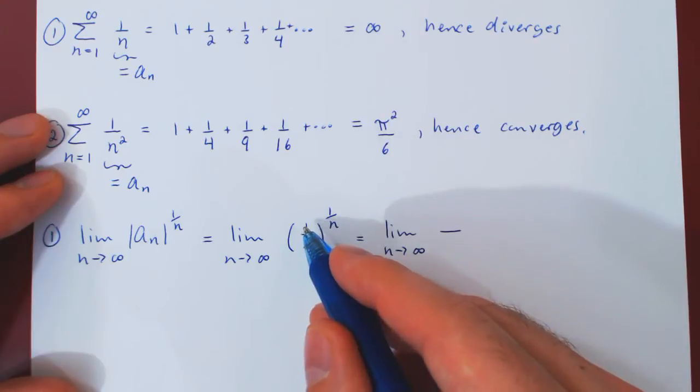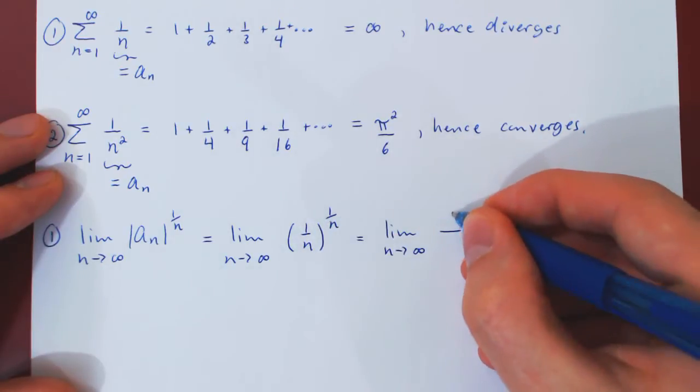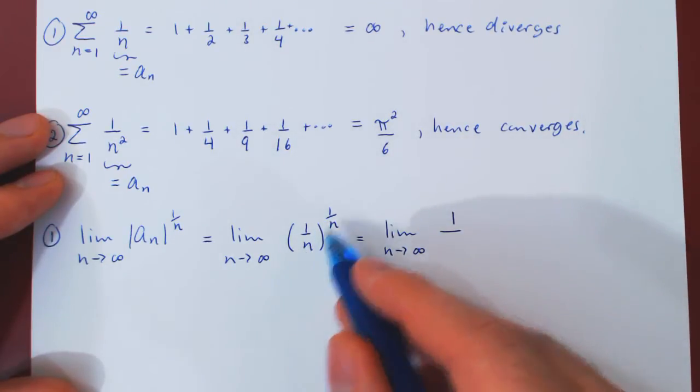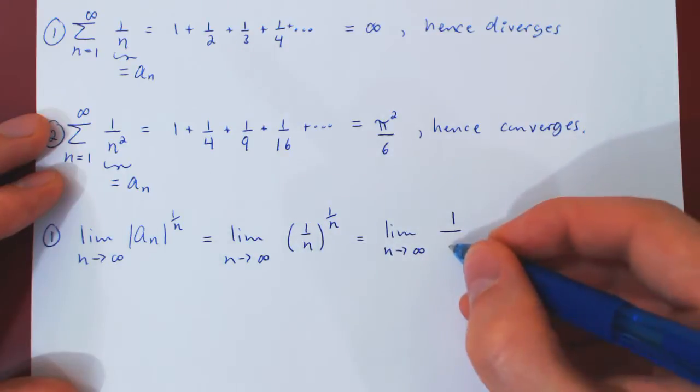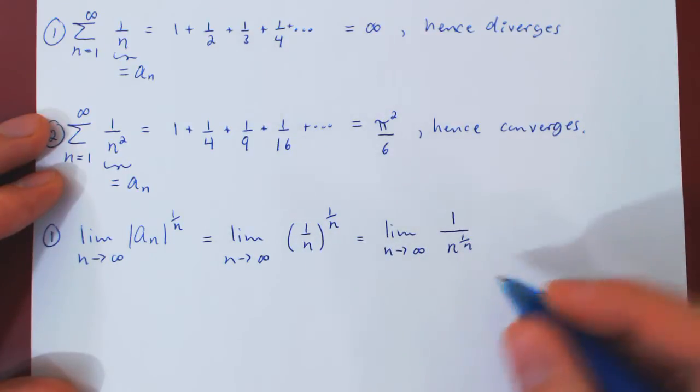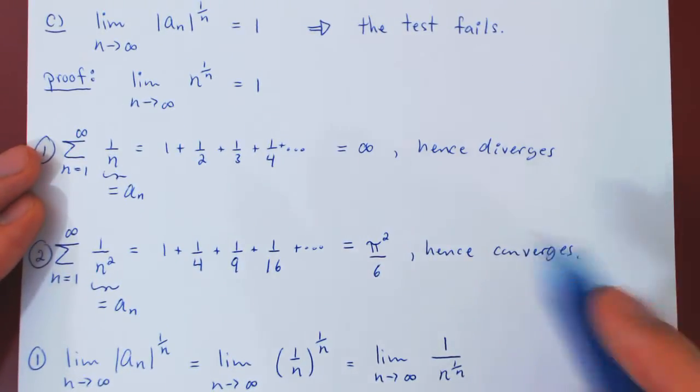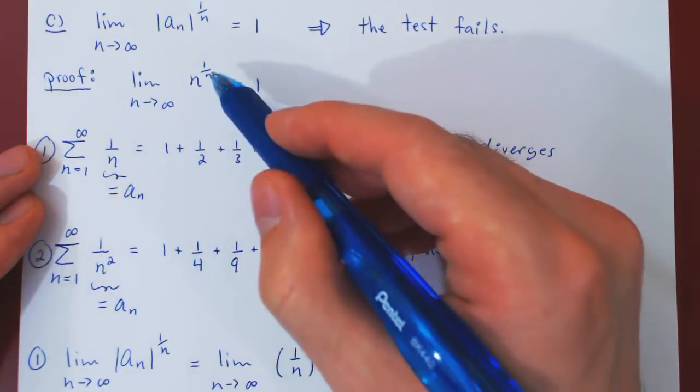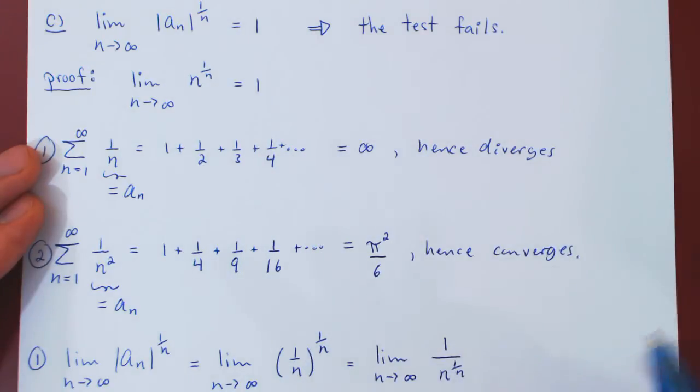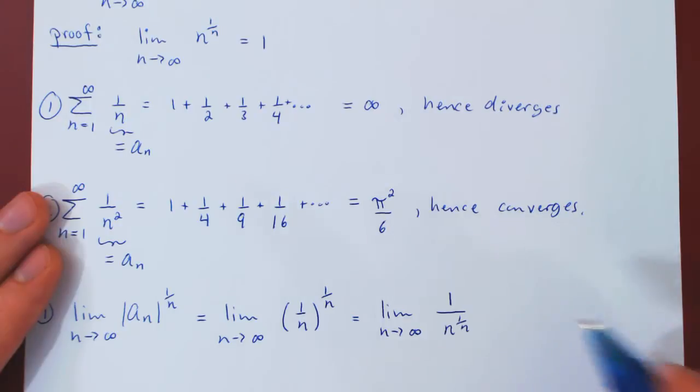Well, 1 to any power is 1. And on the bottom we'll have the nth root of n. But this is our familiar limit, the one we recalled in the beginning. As n tends to infinity, the nth root of n tends to 1. So this term is approaching 1. So the result will be simply 1 over 1, which is of course 1.